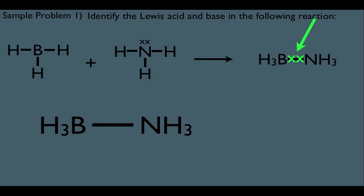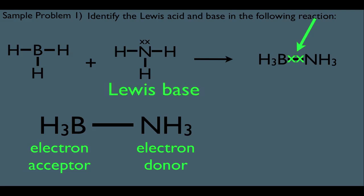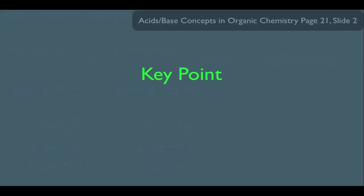That would therefore make the NH3 the electron donor and the BH3 the electron acceptor. So, if that's the case, that makes NH3 the Lewis base and BH3 the Lewis acid. So, what have we learned here? Here, we saw that key point. Lewis defines an acid as an electron acceptor and a base as an electron donor.